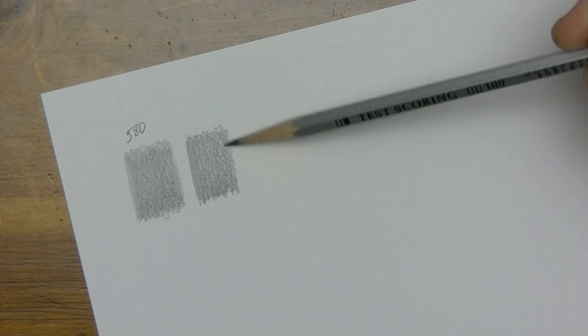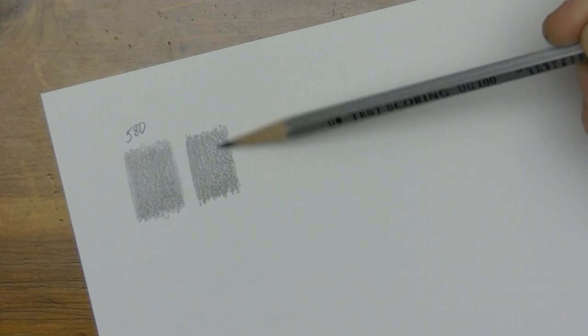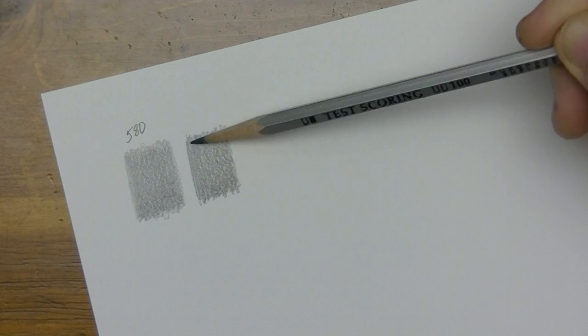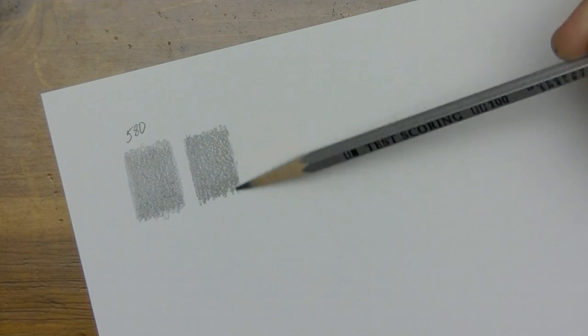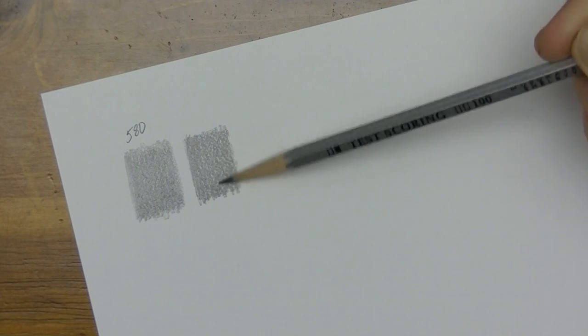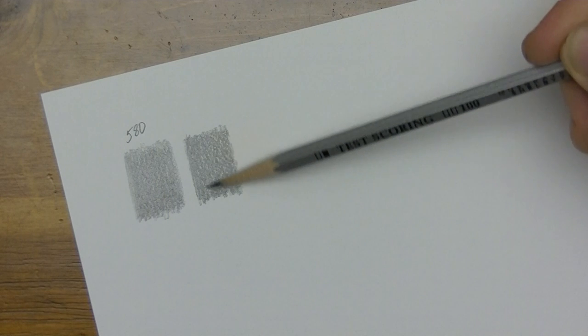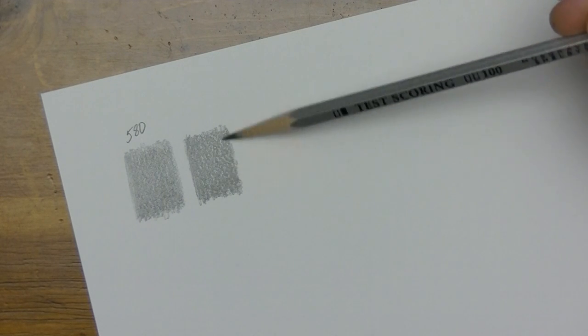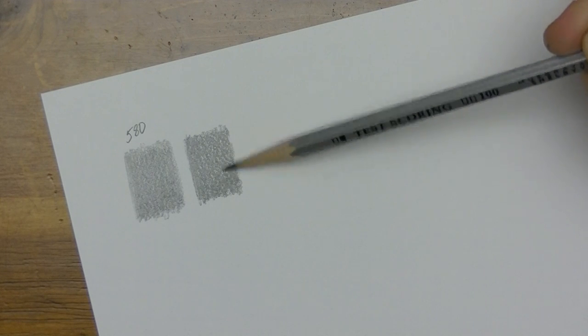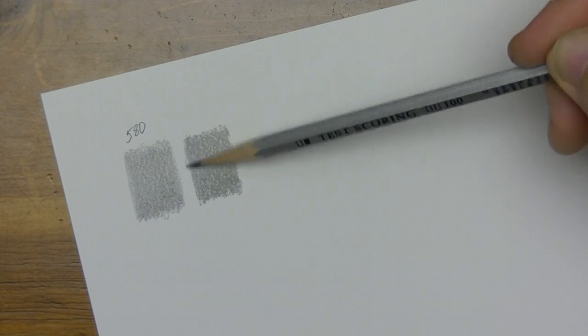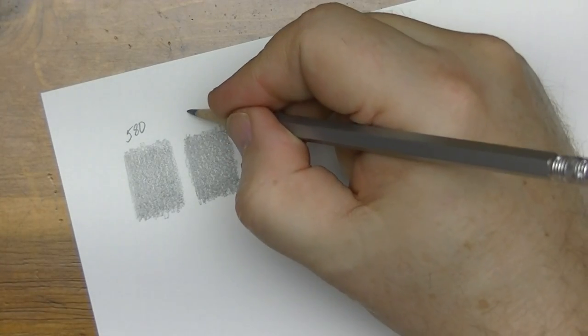These darker pencils tend to be the smoother ones. That's how they get them darker. And you can see it's already exceeded the 580s tone. So you get an idea if you're looking for a darker pencil or just something dark enough. But it will hold the point longer. Okay, so this is the 100.